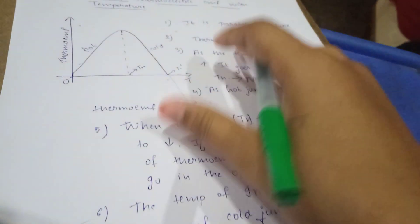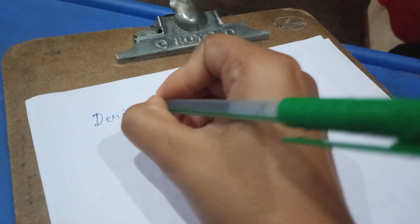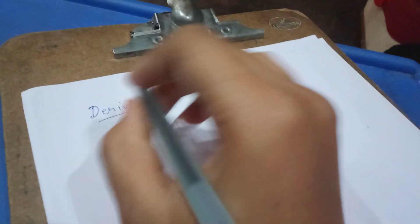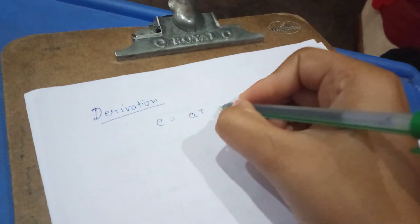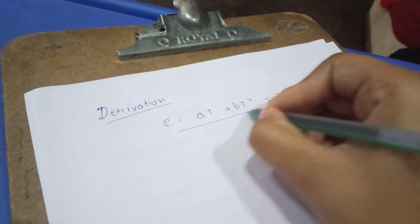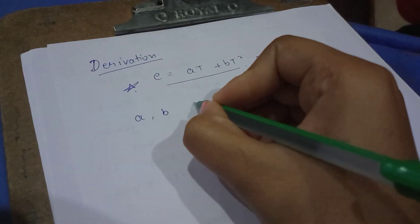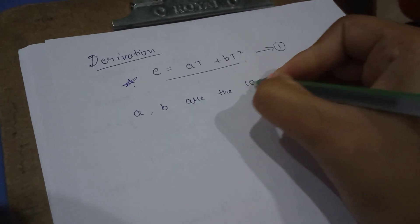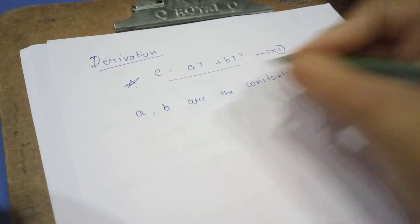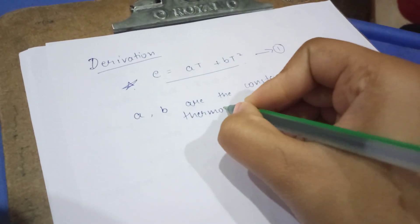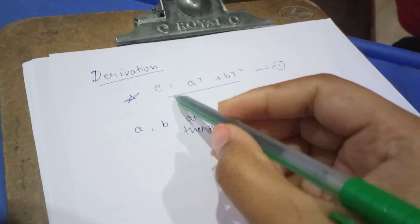These six points are to be written, and next is the derivation, which is a compulsory derivation — if you write it you will get full marks. The first equation you have to remember is E = aT + bT², which is the important equation. Here, a and b are the constants of the thermocouple.